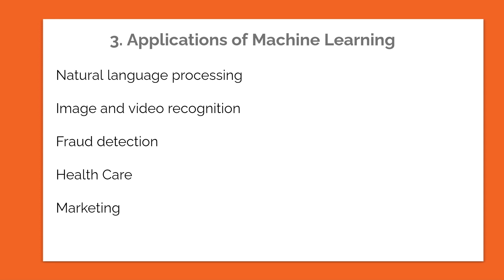The last application is marketing. Machine learning algorithms can be used to analyze customer data and behavior, enabling personalized marketing campaigns and improving customer retention. This is something already being used by advertisement companies like Google and Facebook for understanding our behavior and providing targeted content. So machine learning is going to be a very powerful tool for solving all kinds of complex problems and improving the accuracy and efficiency of many industries, and as developers, we have to embrace it.